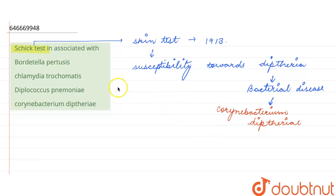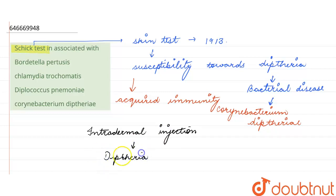This is basically to identify whether a person has any acquired immunity towards this disease. So in Schick test, an intradermal injection of diphtheria toxin